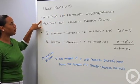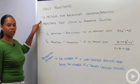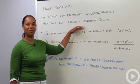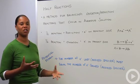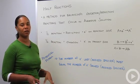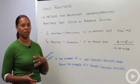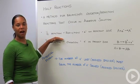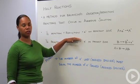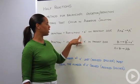Half reactions are a method for balancing oxidation reduction reactions that occur in aqueous solution. Remember, oxidation and reduction, one cannot happen without the other. If you have oxidation, you have to have reduction and vice versa. Here in the half reactions, one of the half reactions will illustrate reduction.